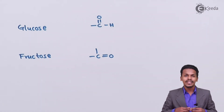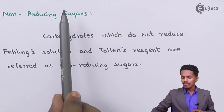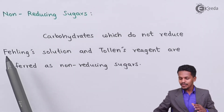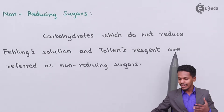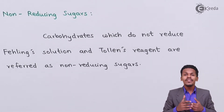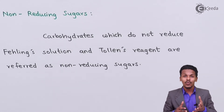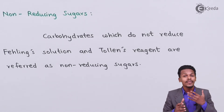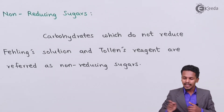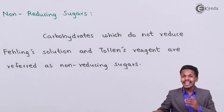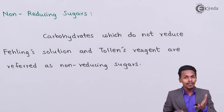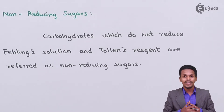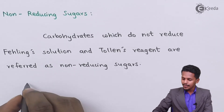Now let me talk about non-reducing sugars. Carbohydrates which do not reduce Fehling's solution and Tollens' reagent are referred to as non-reducing sugars. Unlike glucose and fructose, which have a free carbonyl group (C double bond O), in non-reducing sugars there is no availability of a free carbonyl group, and that is the reason they do not show a positive Fehling's solution or Tollens' reagent test.